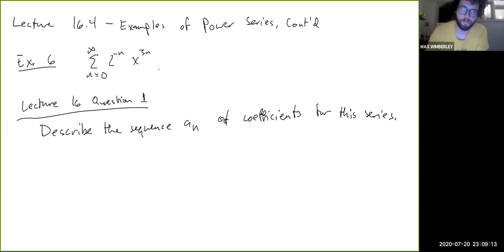Okay, so the sequence of coefficients a_n, what the example is meant to hint at and what the book talks about too, is that a lot of people get confused and they look at this and they say, okay, a_n equals 2 to the minus n. So this is wrong.